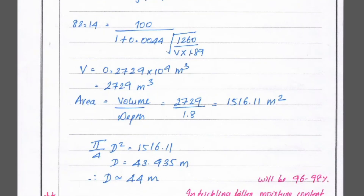Finally, we find the diameter: (π/4) × d² = 1516.11. Solving for d gives d = 44 meters. So the diameter of the trickling filter is 44 meters. This is the method to solve a trickling filter design problem. We will see more problems in the next video. Thank you.